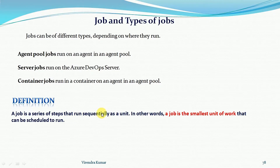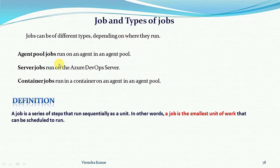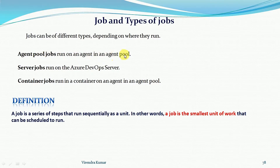Now, what are the types of jobs available in the Azure DevOps CI/CD pipeline? There are different types of jobs depending on where we run them. We will consider three types. The first type is agent pool jobs — agent pool jobs always run on an agent in an agent pool, which we have already discussed, having created agent pools with self-hosted and Microsoft-hosted agents.